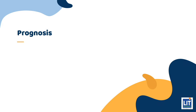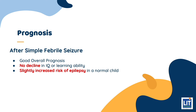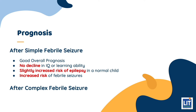Prognosis after a simple febrile seizure is quite good. Neither a decline in IQ nor learning ability has been noted in patients with simple febrile seizures. There is a slightly higher risk of epilepsy when compared with controls and a significant risk for recurrent febrile seizures, with an overall recurrence rate of about 30%. After a complex febrile seizure, there is a significantly increased risk of epilepsy, and children with abnormal neurologic development have a particularly increased risk.